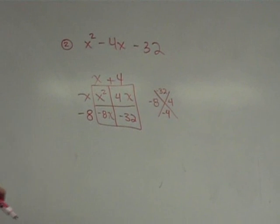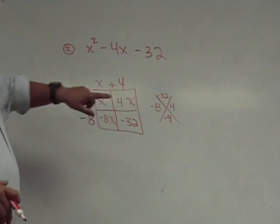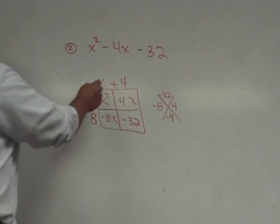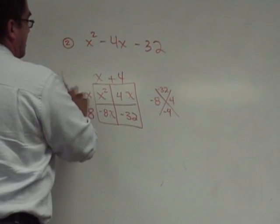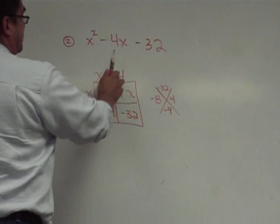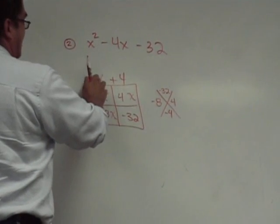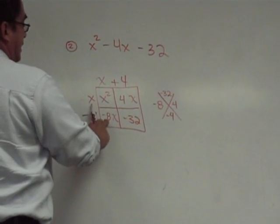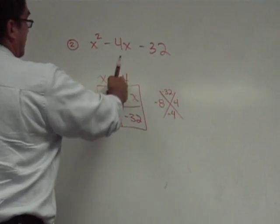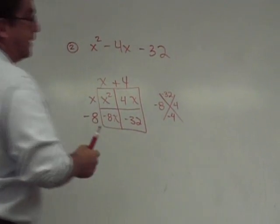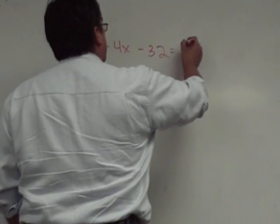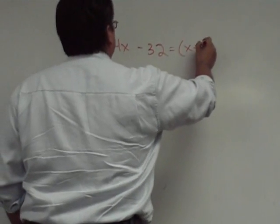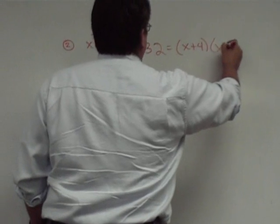Now, remember, if you mess up the signs, don't worry because you'll catch it right here when you do your quick check. X times X, X squared. X times 4, 4X. X times negative 8, negative 8X. And negative 8 times positive 4, negative 32. Perfect. Everything matches. So, now I'm ready to write my factored form here. X plus 4, X minus 8.